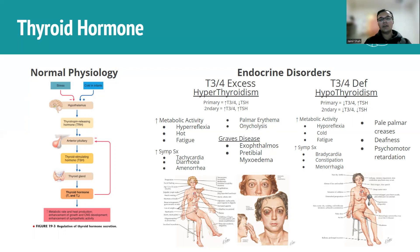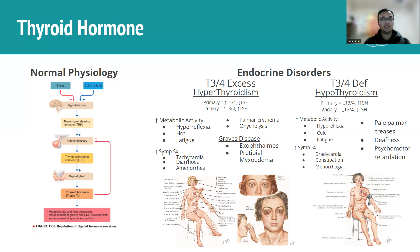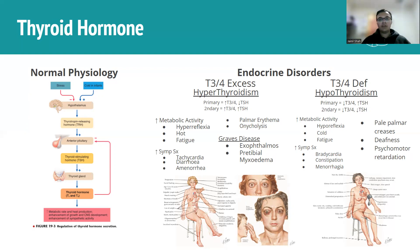In secondary hyperthyroidism, the problem is at the anterior pituitary, where TSH is overproduced, causing the thyroid to overproduce T3 and T4 — so both TSH and T3/T4 are elevated. You can apply the same logic to hypothyroidism and work out what the expected levels would be.